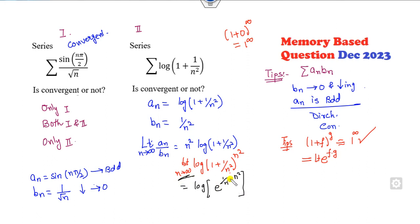Take the limit as n approaches infinity - this will cancel out, so it's log e. Log e is 1, which is finite, and this is convergent by using the p-test. So once this is convergent, this is also convergent. Yes, both are convergent - that's the right answer.